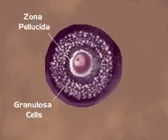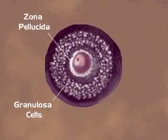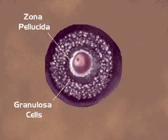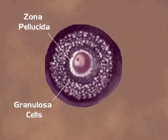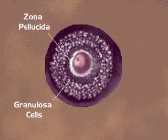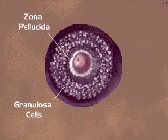The secondary follicle contains many more granulosa cells, and an accumulation of follicular fluid that is secreted by granulosa cells. This fluid coalesces in the follicle to form the antrum.